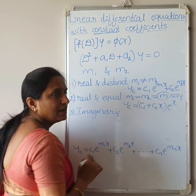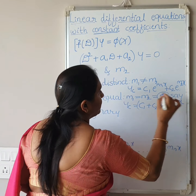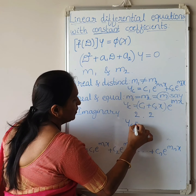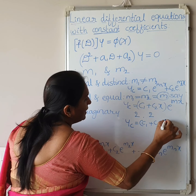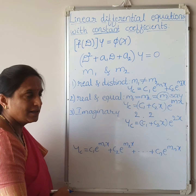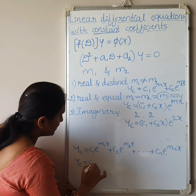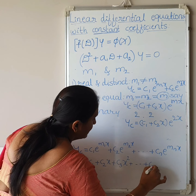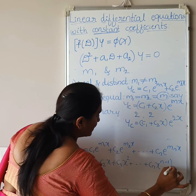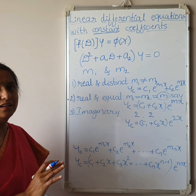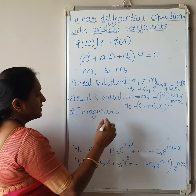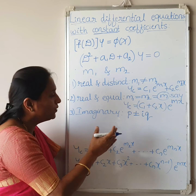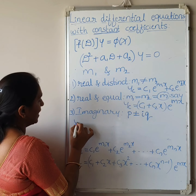For real and equal roots, where m1 equals m2, say both equal m, the complementary function is yc equals (c1 plus c2·x)·e^(mx). For example, if both roots are 2, then yc equals (c1 plus c2·x)·e^(2x). In general, for n equal roots, yc equals (c1 plus c2·x plus c3·x² plus so on plus c_n·x^(n-1))·e^(mx).